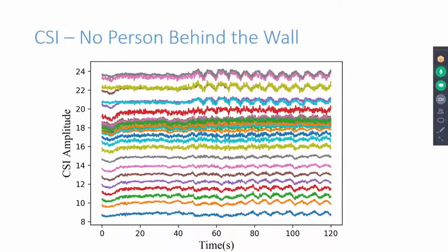This graph shows CSI amplitude of 30 OFDM subcarriers when there is no person behind the wall. We can observe a relatively stable profile of CSI in the absence of a person.